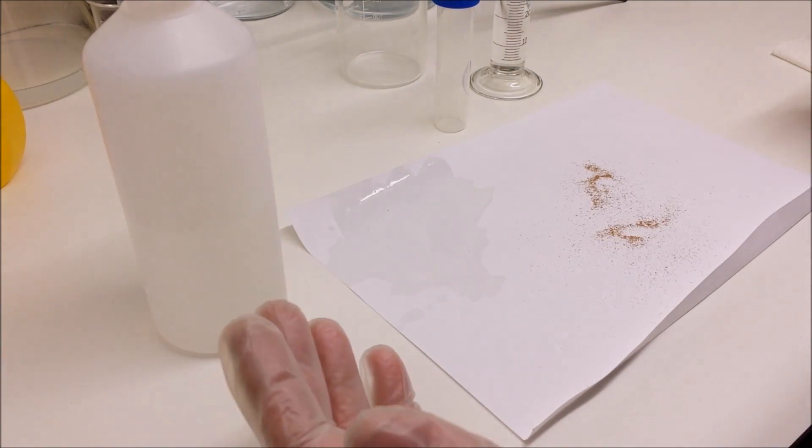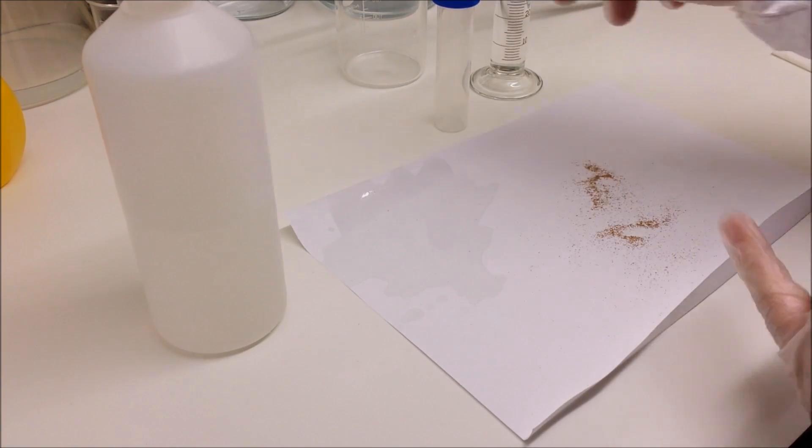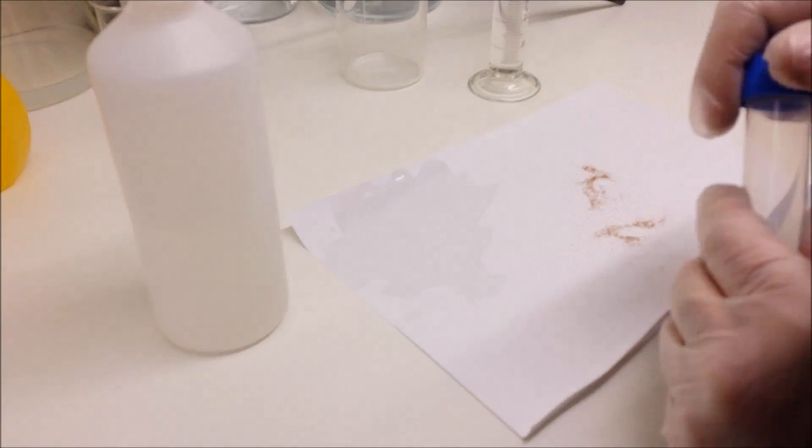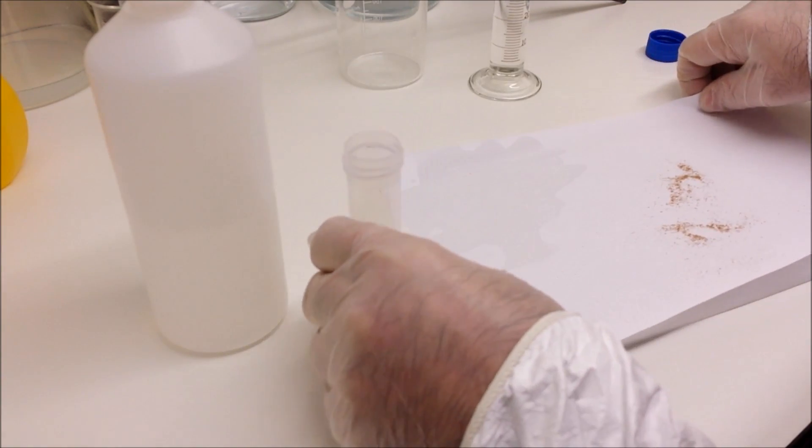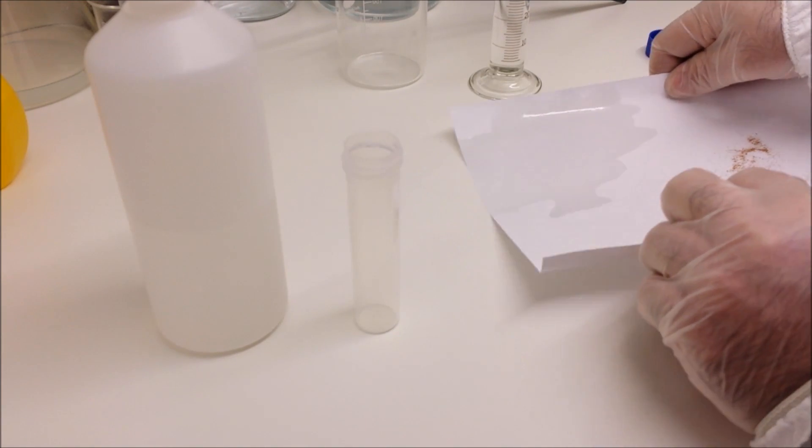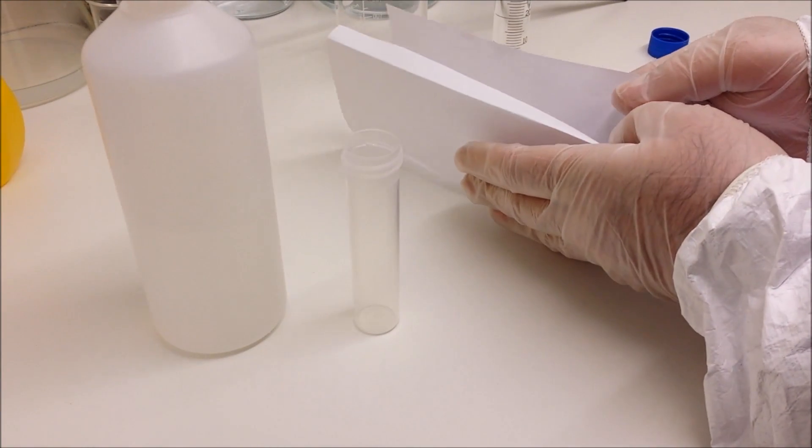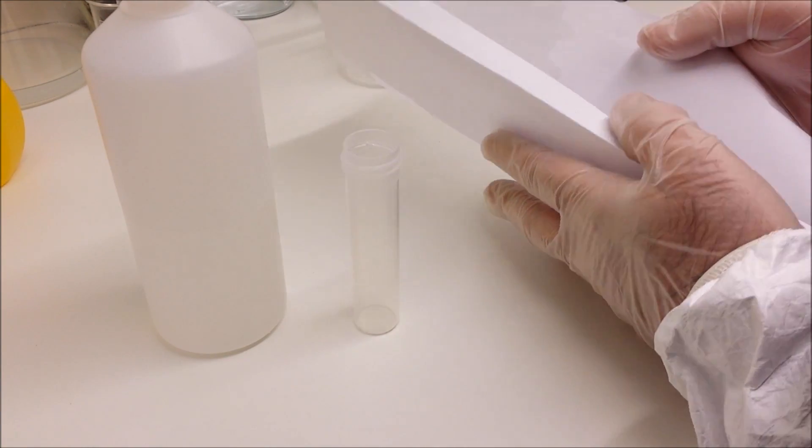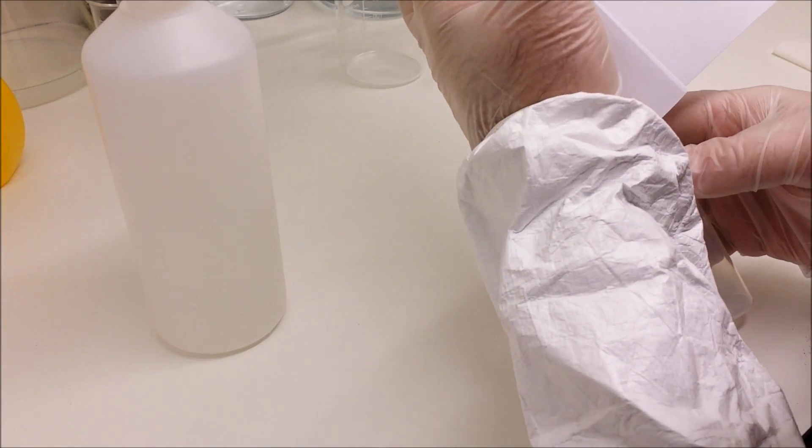Once we've done that, we need to gather the seeds together and tip them into this test tube. You have to be very careful because they'll fly all over the place. Just bend the paper in half so they form into a groove in the center, and decant those into the test tube.